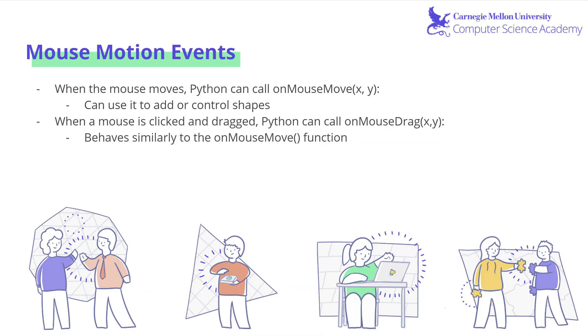Just like when we clicked our mouse before in Unit 2, we can also call functions when a mouse moves over the canvas, such as onMouseMove with X and Y as its input. You can use this to control or add shapes where the mouse is being moved. In addition, when the mouse is clicked and dragged, you can also call onMouseDrag, which behaves very similarly to onMouseMove.